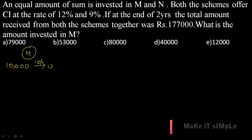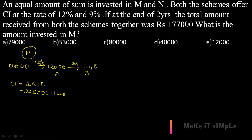In Yum scheme at 12%, 12% of 10,000 = 1200 — wait, 12% of 10,000 is 1200, but the speaker uses 12,000 as 'a'. Since it is for two years, again 12% giving 1440 as 'b'. Compound interest for two years: 2a + b = 2 × 12,000 + 1,440 = 25,440. So the compound interest from scheme Yum is 25,440 units.